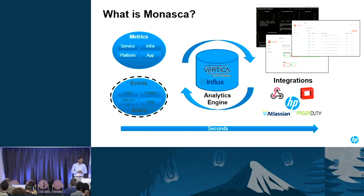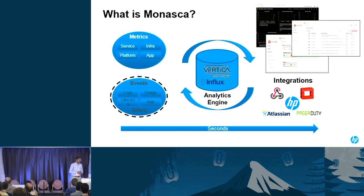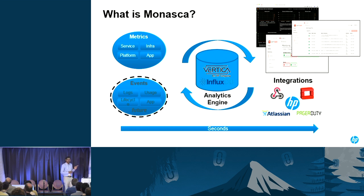Before getting into real auto scaling, let us see what Monasca is. Monasca is a highly performant, scalable, fault-tolerant, and extensible monitoring service. It is growing a lot in the OpenStack community. Currently it provides metrics for service, infrastructure, platform, and applications. In the future they are planning to create events for logs, life cycle, and usage, etc.